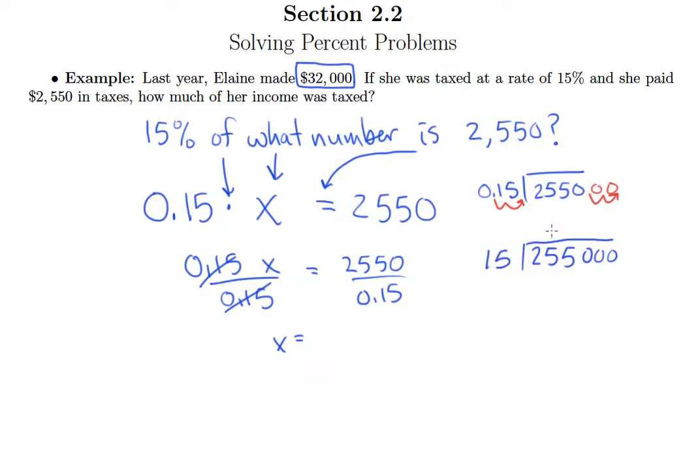So 15 goes into 25 once. I have a remainder of 10. Drop the 5. 15 goes into 105 seven times, and that happens exactly seven times. And then we have a whole bunch of zeros to drop down. Remember when you have more zeros to drop down, you have to say 15 goes into 0, 0 times, until you haven't dropped any more of those zeros.